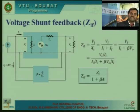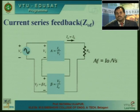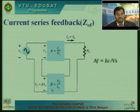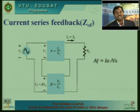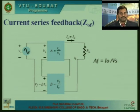Next, we proceed to current series feedback. In this topology, the input voltage V_s drives an open-loop amplifier with gain A, and a feedback network with gain beta. The overall gain is I_0 / V_s, which is output current divided by input voltage. Here, current is fed back in series, which determines the controlling element. We will now go for output impedance determination.